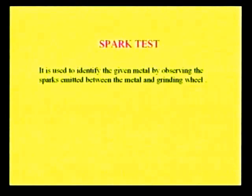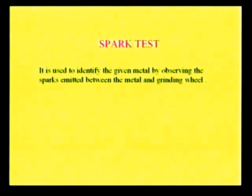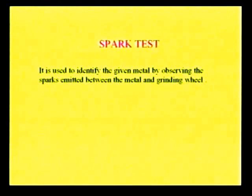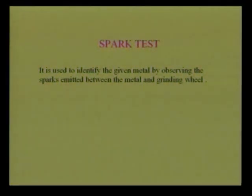The last one is the spark test. In this test, the work piece is pressed against a rotating grinding wheel and the corresponding sparks are observed. Depending upon the sparks developed, we can determine what type of material it is — whether it is a softer or harder one. This is generally a simple visual inspection method for finding whether the material is softer or harder, and it is the cheapest method compared with other non-destructive methods.